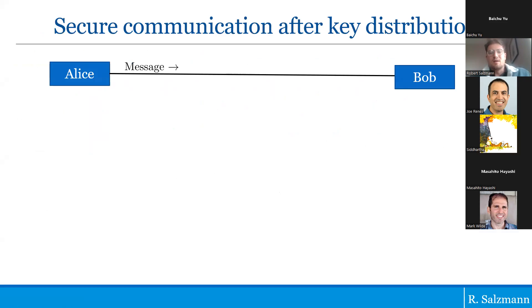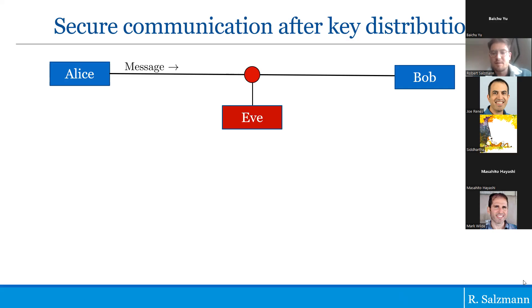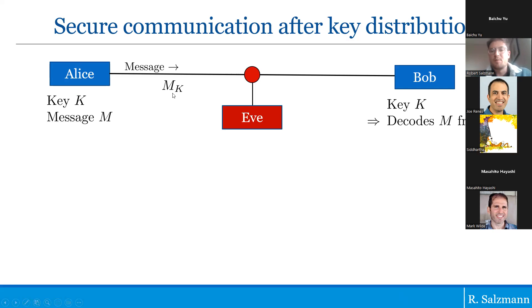Let me quickly remind everyone how you would communicate a classical message if you have a secure key. Alice and Bob want to communicate a classical message, but there's Eve in the middle trying to understand what the message is. If Alice has a key, she can encrypt a message to M_K, and Bob, also having the key, can decode the message from the encrypted message M_K.